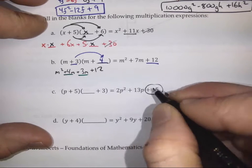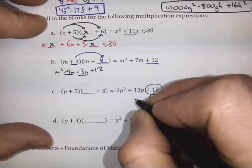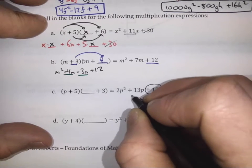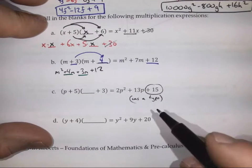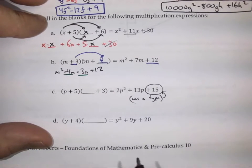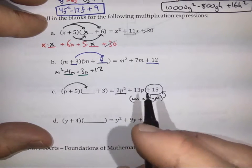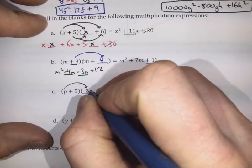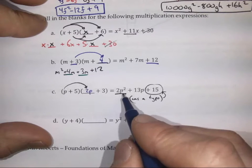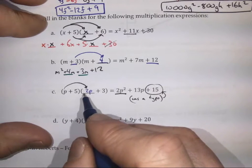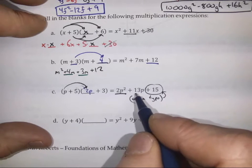So this one had a typo originally — this was originally a 30, but we've replaced it. I think I've adjusted that on Google Classroom. Anyway, we have to multiply P by something and we're going to get 2P squared when we're done. Very simply, that's going to be 2P. And you can multiply each of these through and see how, when we're done, we end up with 13P — we get that 10P from the 5 times 2P, and then P times 3 is 3P, so overall that's 13P.